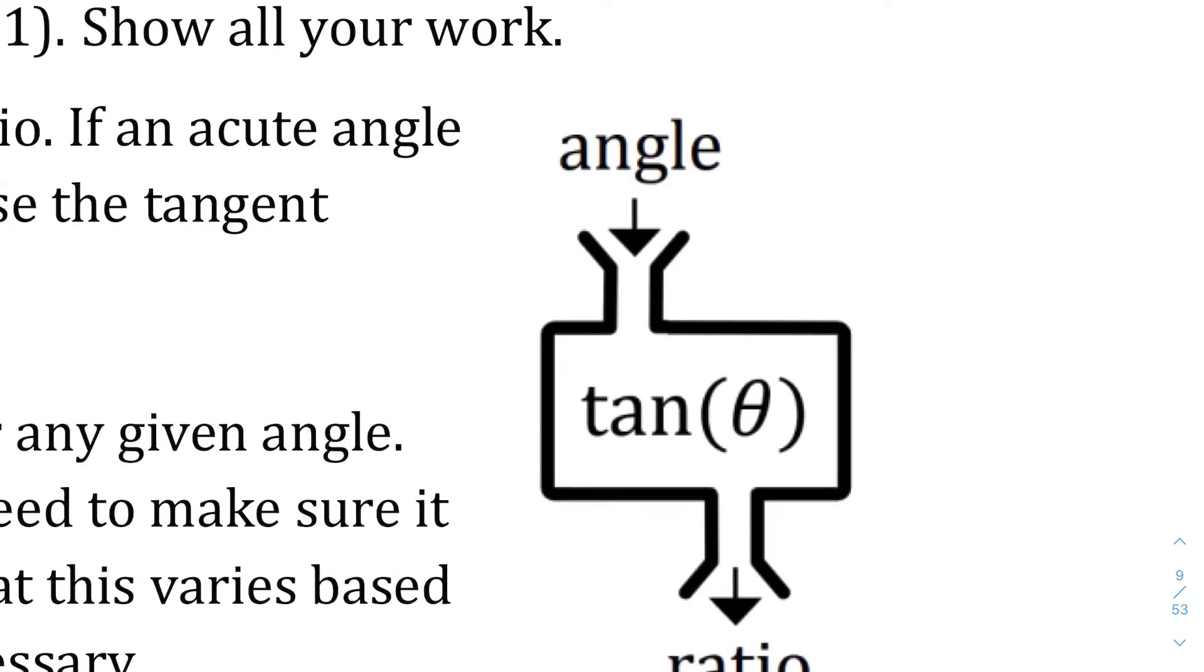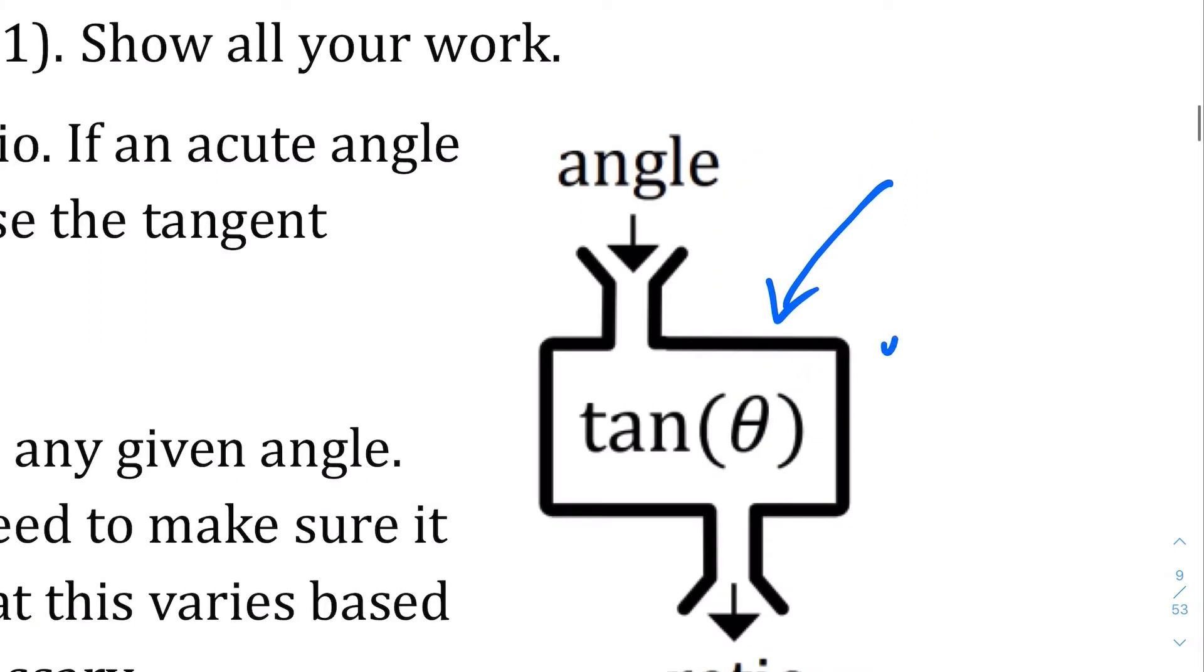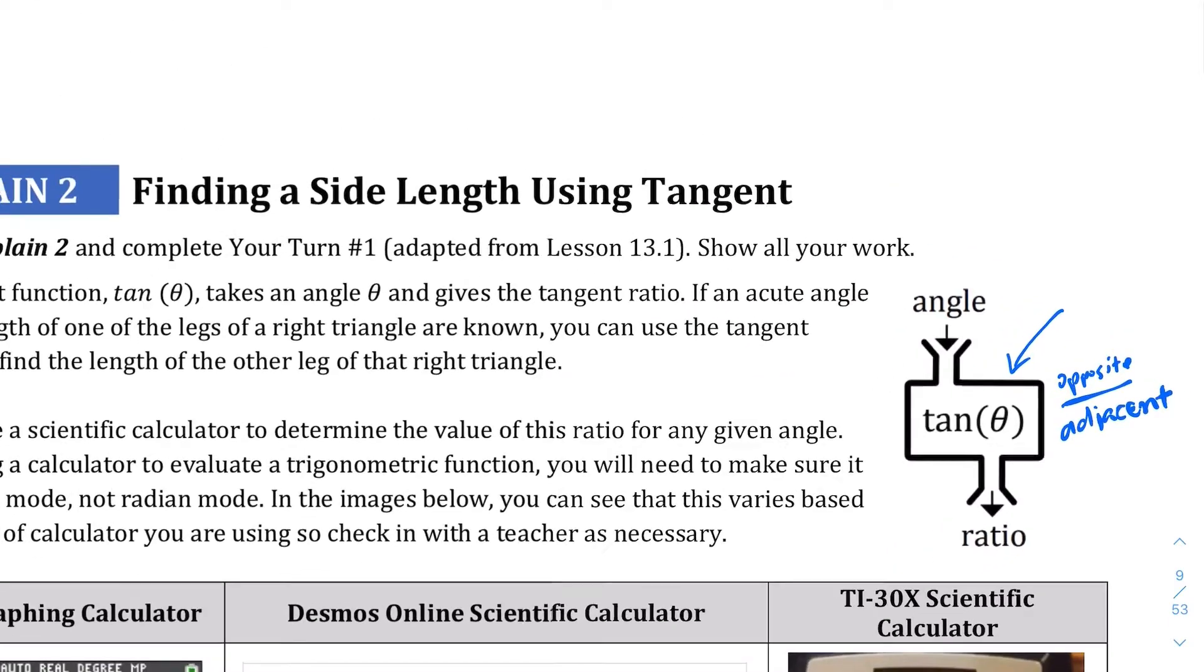You kind of have to treat these tangent ratios, I mean they are essentially functions, but you treat them as functions where when you take an angle that you know, you plug it in and you can use it to find the ratio of the sides. In the case of the tangent function, the ratio that we're working with is the opposite over the adjacent, meaning it's the ratio of the opposite side compared to the adjacent side.